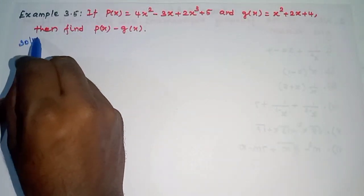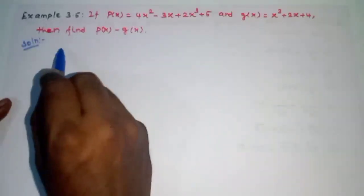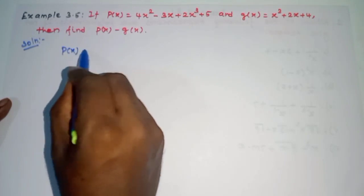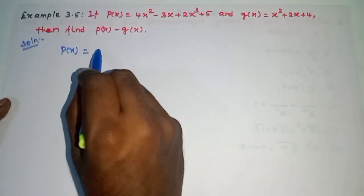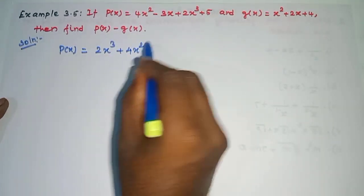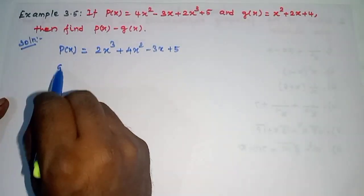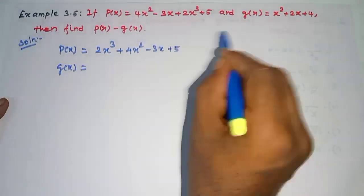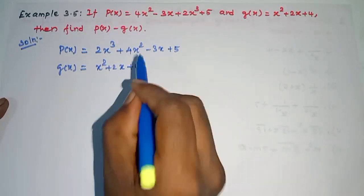See solution. In the P of x and Q of x polynomials, we subtract. P of x in descending order: First, 2x cube plus 4x square minus 3x plus 5. Next, Q of x is equal to x square plus 2x plus 4.